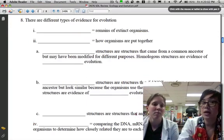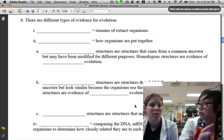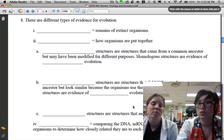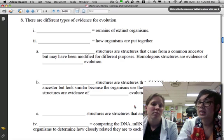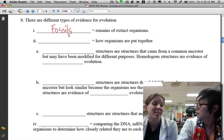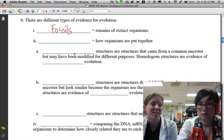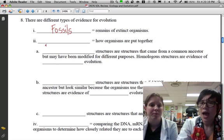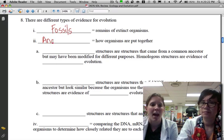There are different types of evidence for evolution. This is really important, this shows up every year on the SOL. What are the remains of extinct organisms called? Those are called fossils. We can look at fossils to see what kinds of organisms have lived before, to see how they have changed over time, and to date organisms. And how organisms are put together? That's called an organism's anatomy.